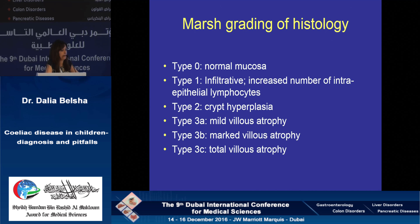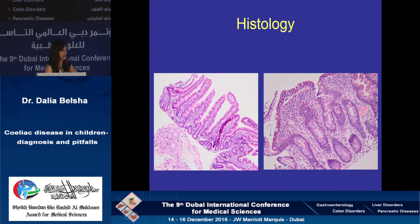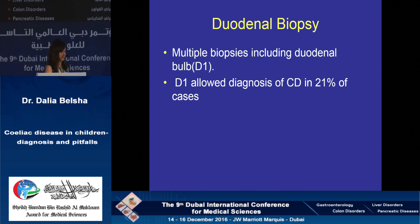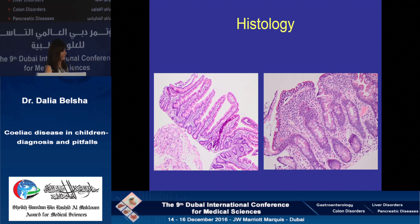The modified MARSH grading of histology — just a reminder. MARSH 1 is not a diagnosis for celiac disease; you need to keep monitoring those patients. This is a bit of histology as a reminder: the normal appearance of the villi versus the flattened villi with crypt hyperplasia, infiltration of inflammatory cells, and intraepithelial lymphocytosis — the characteristic features of MARSH 3C criteria.